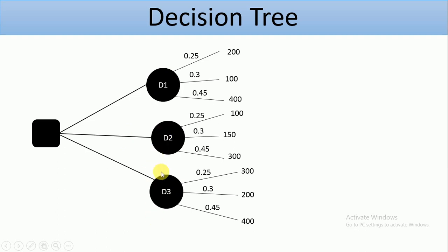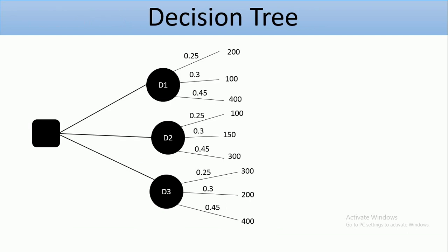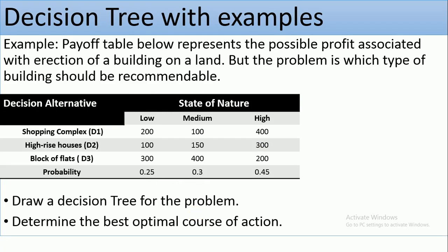For each of these decision alternatives, we have how many states of nature? We have three states of nature: low, medium, and high. So that means from each decision alternative, three branches come out of it. And that is why you can see here that in decision alternative D1, we have three branches coming out of it. Same thing for D2, three branches coming out of it. Same thing for D3, three branches coming out of it.